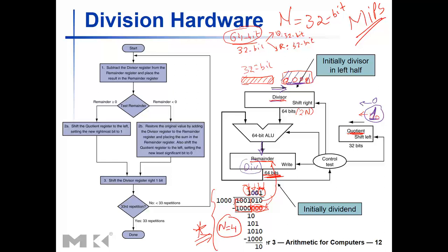At the end, what you have in the divisor register is eight zeros on the upper left and the divisor in the lower right. You will have the quotient value in the quotient register, and in the remainder register you will have the remainder of the division. It will take n steps. That's why this algorithm is slow but simple. Finally, the divisor is shifted all the way to the right, the quotient register has the quotient result, and the remainder register has the remainder.